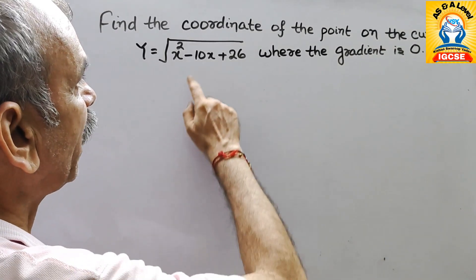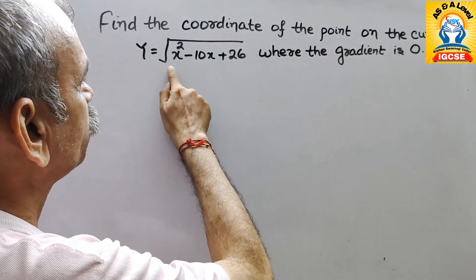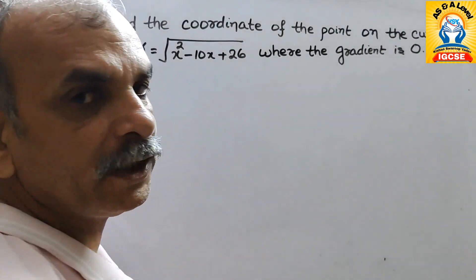Your question is find the coordinate of the point on the curve y equals root x squared minus 10x plus 26 where the gradient is 0.